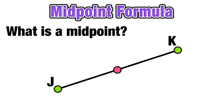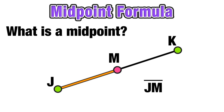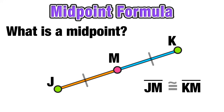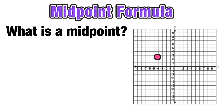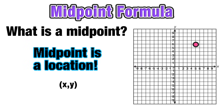The midpoint cuts the line segment into two congruent halves. In this case, we have line segment JK. Point M is directly in the middle, so that JM is one half and KM is the other half, and they are both congruent.